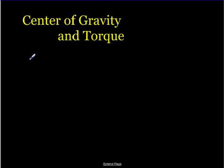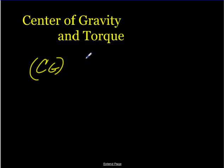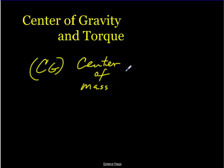In this video I want to give you some information on the center of gravity of objects and torque. The center of gravity, which we abbreviate CG most of the time, is where the center of mass is. Center of gravity and center of mass are used interchangeably. It's not always the same, but for what we're doing we're going to consider them to be the same thing. So if you take a ball, the center of gravity is going to be right in the very center — that's also its center of mass.